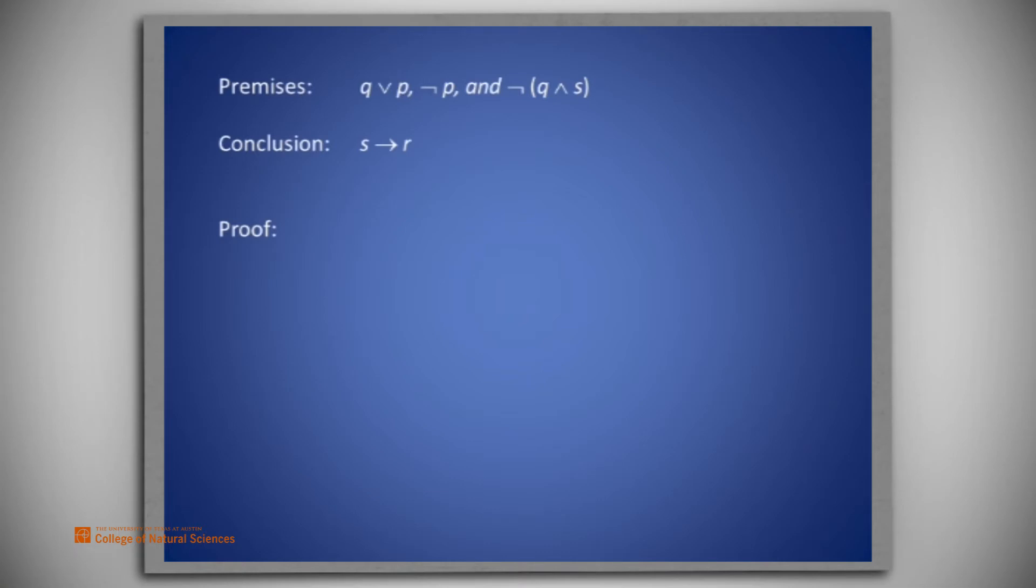Since we know nothing about R, recall it came out of thin air, we see that we had better show that S is false. That becomes our first intermediate goal. We need to show that S is false.